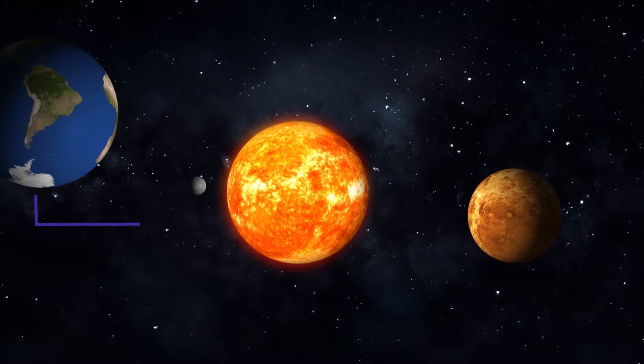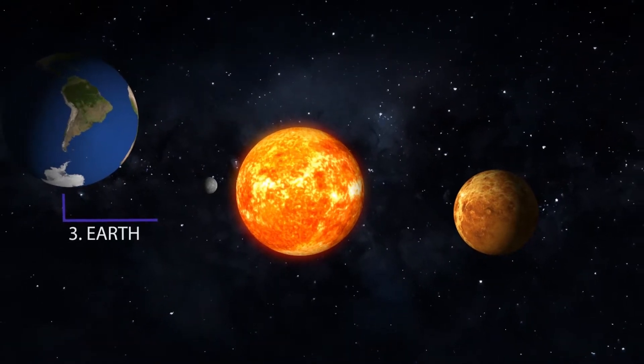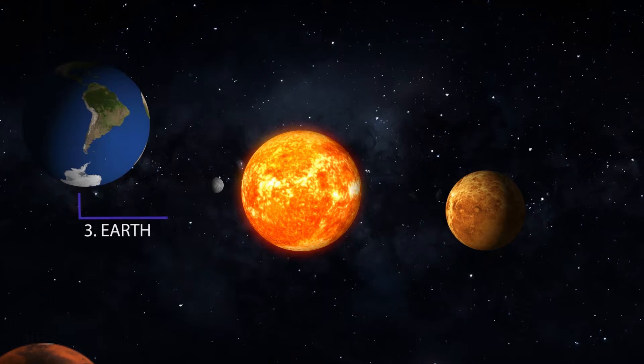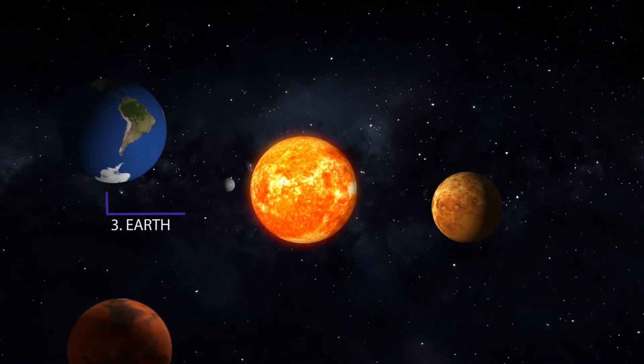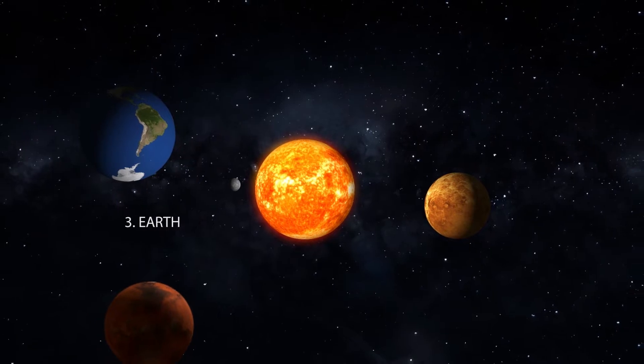Earth, our home planet, is the only place we know of where we can find living things. It's also the only planet in our solar system with liquid water on the surface. For comparison, if the sun is as tall as your house front door, Earth would be about the size of a coin.